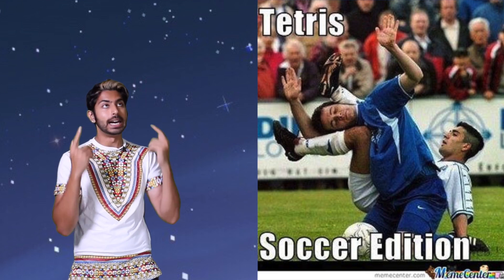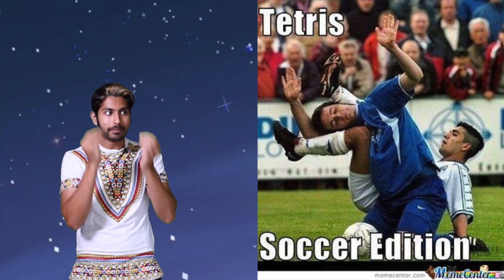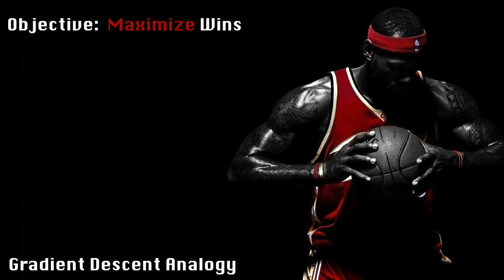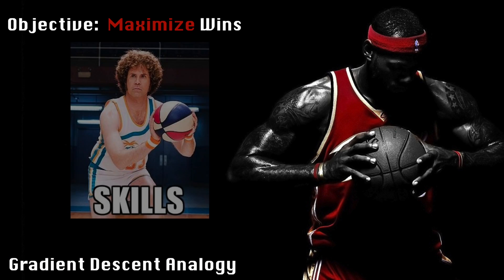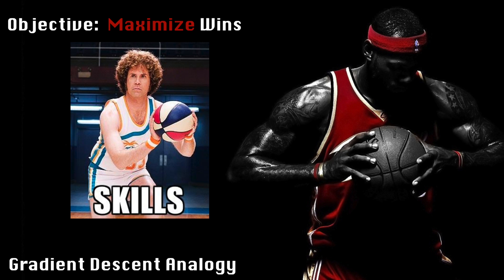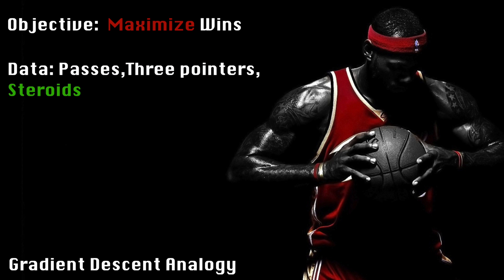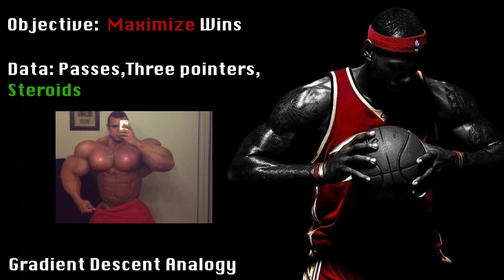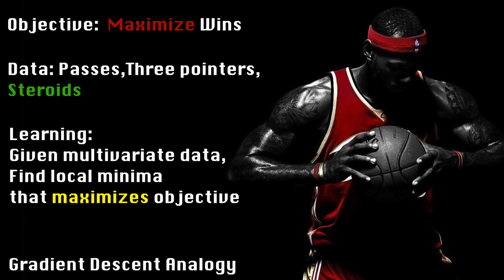Another way of thinking about the idea of gradient descent is examining how a professional athlete improves at a game. As long as there is some objective function that can be measured, like the number of wins in a season, and some data that contributes or detracts from that function, say passes, number of three-pointers, steroids, that player can iteratively take baby steps in his routines after analyzing the data to improve.